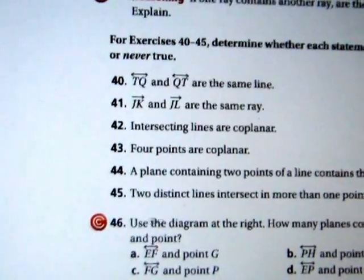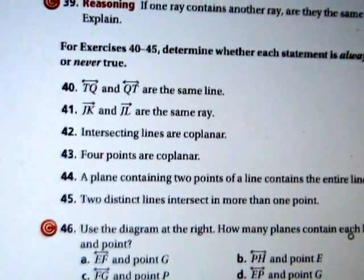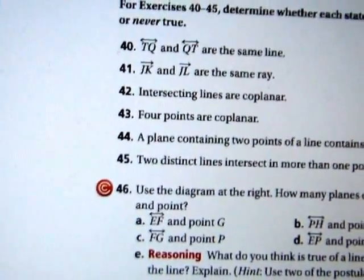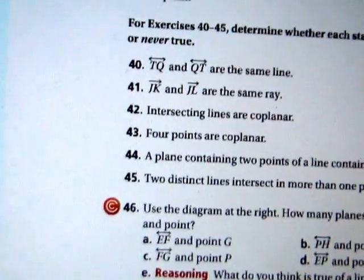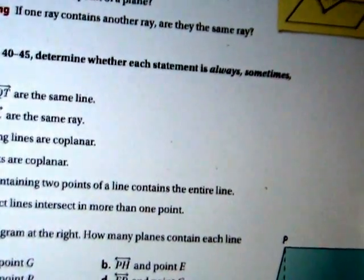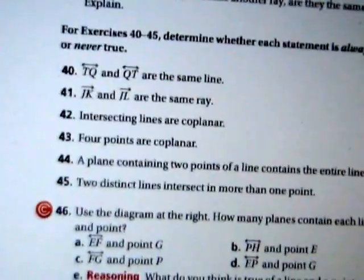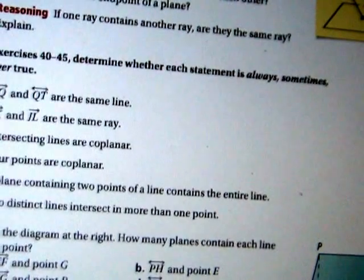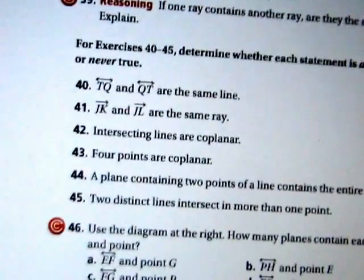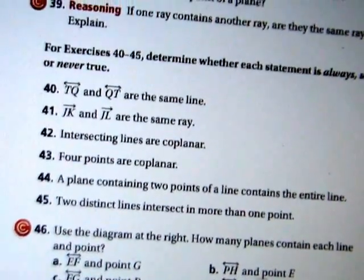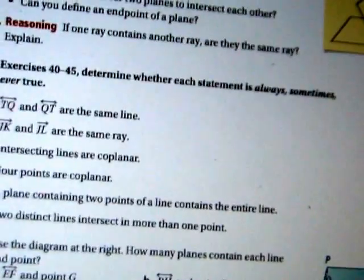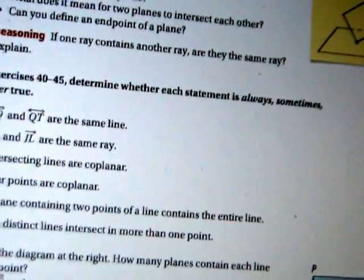So 46, use the diagram at the right, how many planes contain each line and point? How many planes contain line EF? Well, here's line EF. It is part of plane HEFG. It is also part of plane PEFQ. But how many contain line EF and point G? Only one. The only one that contains line EF and point G is plane HEFG. Alright, B, containing line PH and point E. So here's PH here, and point E is over here. The only plane that contains line PH and point E would be plane PHE right here.